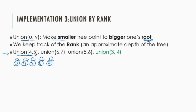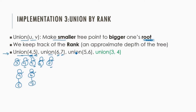Since there are no other elements, the representatives are the same as the single members. To perform union(4, 5), we find the root of 5, which is 5, and the root of 4, which is 4, and we connect 5 with 4 — so 4 becomes the representative. Similarly for union(6, 7): root of 6 is 6, root of 7 is 7, so we connect 7 with 6. Next for union(5, 6): we find the root of 5, which is 4, and the root of 6, which is 6 itself, so we connect 6 with 4.